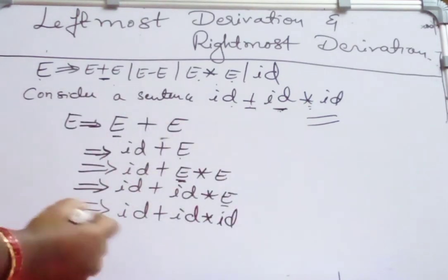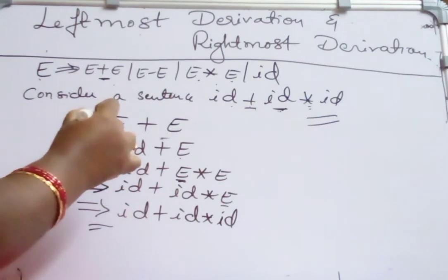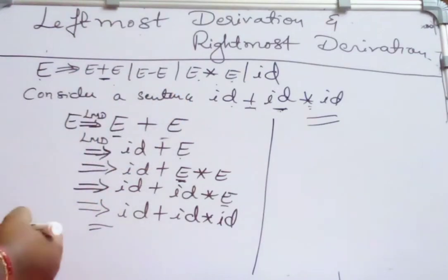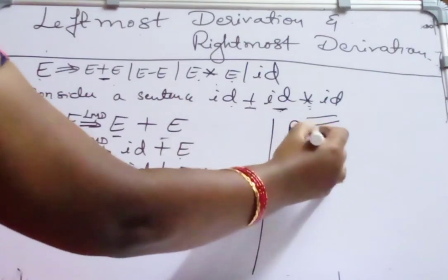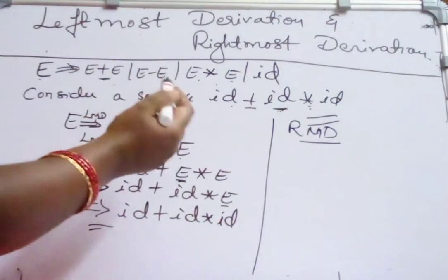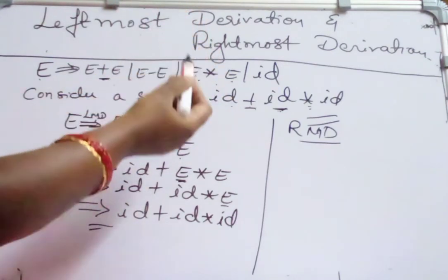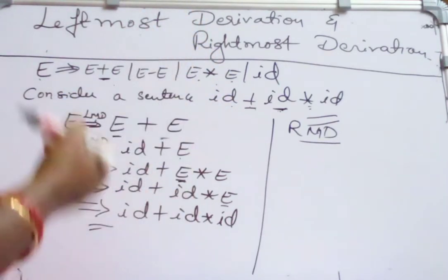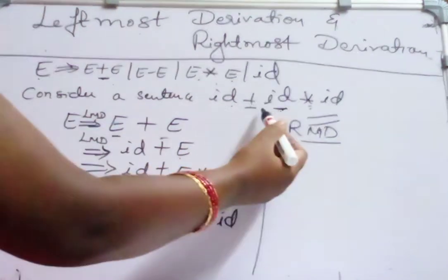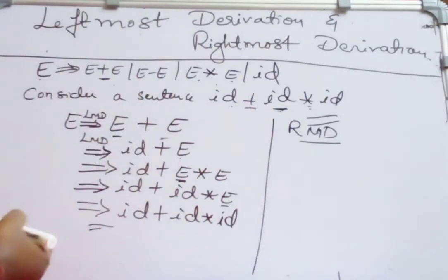This is leftmost derivation (LMD). Now the same string can be obtained by applying rightmost derivation. In the derivation process, if a rightmost variable is replaced at every step, then the derivation is said to be rightmost derivation. I want to derive the string ID plus ID star ID using rightmost derivation.